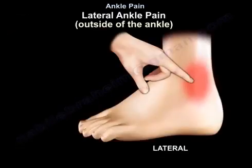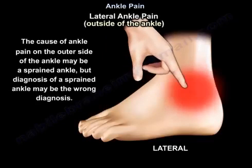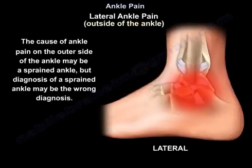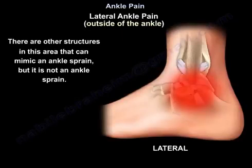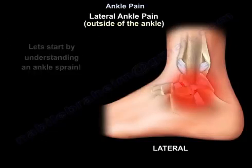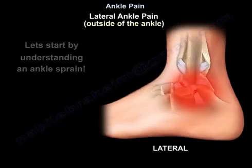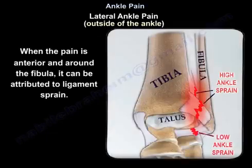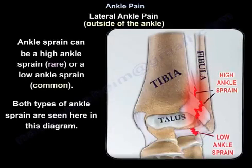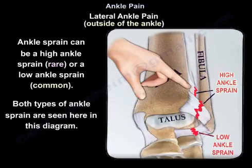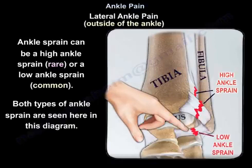The causes of ankle pain on the outer side may include sprained ankle, but a diagnosis of sprained ankle may be the wrong diagnosis, as there are other structures in this area that can mimic an ankle sprain. Ankle pain anterior and around the fibula can be attributed to ligament sprain. Ankle sprain can be a high ankle sprain, which is rare, or a low ankle sprain, which is common. Both types are seen in this diagram.